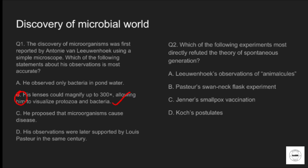Which of the following experiments most directly refuted the theory of spontaneous generation? Option A: Leeuwenhoek's observation of animalcules. Option B: Pasteur's swan neck flask experiment. Option C: Jenner's smallpox vaccination. Option D: Koch's postulate. The correct answer is option B, Pasteur's swan neck experiment, because Pasteur's experiment proved that sterilized broth in a swan neck flask remained free from microorganisms unless exposed to air containing dust and microbes.